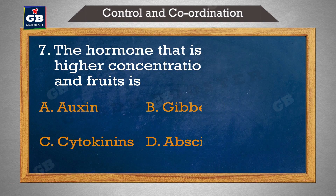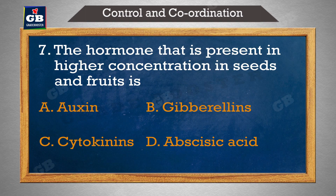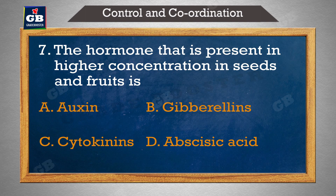The hormone that is present in higher concentration in seeds and fruits is — hormone jo seeds aur fruits mein higher concentration mein maujud hai: a) auxin, b) gibberellins, c) cytokinins, d) abscisic acid.